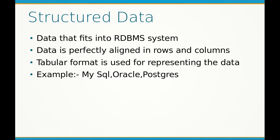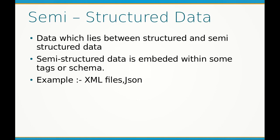After structured data comes semi-structured data — data which lies between structured and unstructured. In structured data we have everything aligned in rows and columns, while unstructured data has no proper format. Semi-structured data is embedded within tags or a schema, and examples include XML files and JSON. We call it semi-structured because if you look at any XML or JSON file, you have blocks with different attributes.